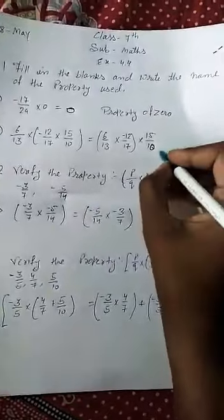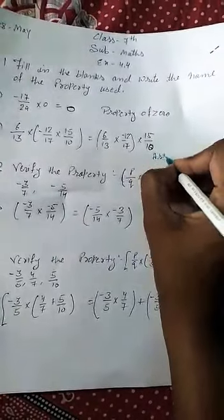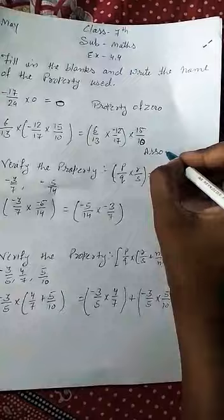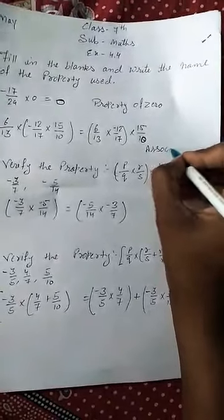This property is called the associative property. Like the associative property of addition we learned, we also have the associative property of multiplication.